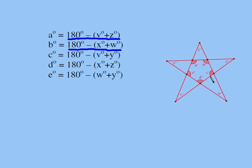Angle c, angle v, and angle y add up to 180. So angle c has to be 180 minus v plus y. Angle d, in a similar manner, is equal to 180 minus x plus z.